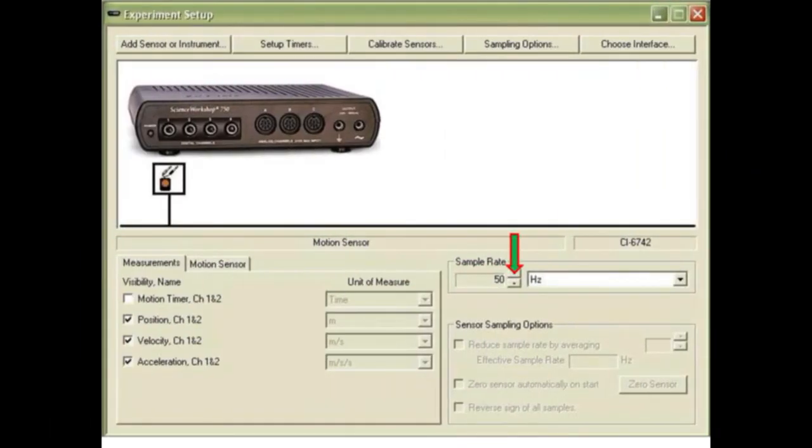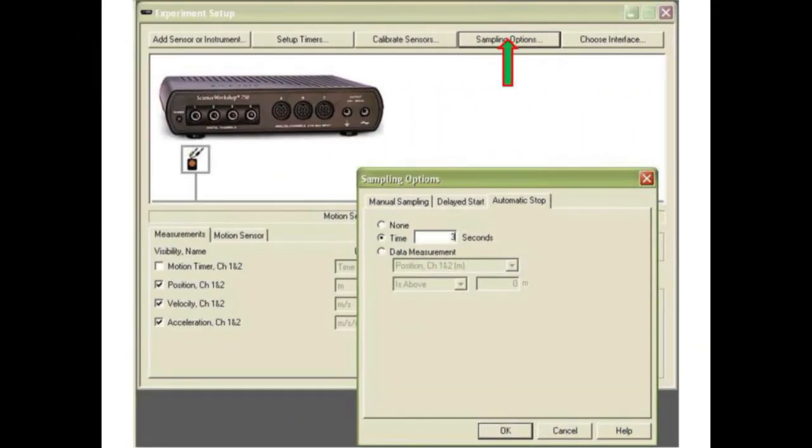Set the motion sensor sample rate to 50 Hz. Use sample options to set the stop time to 3 seconds.